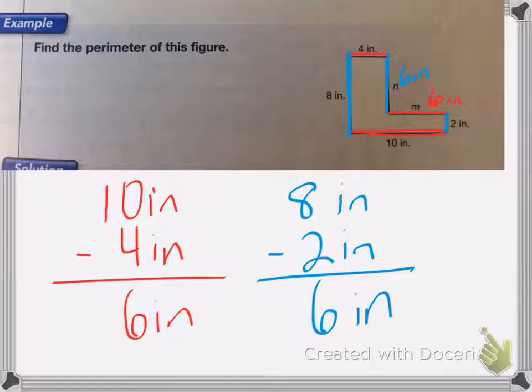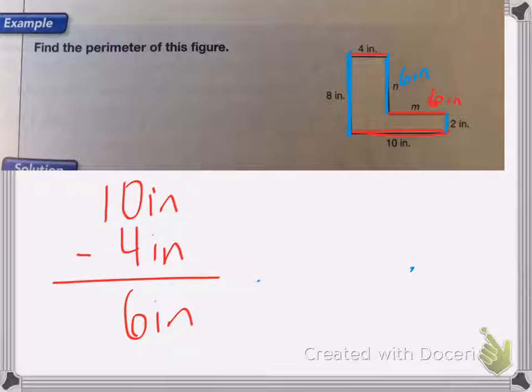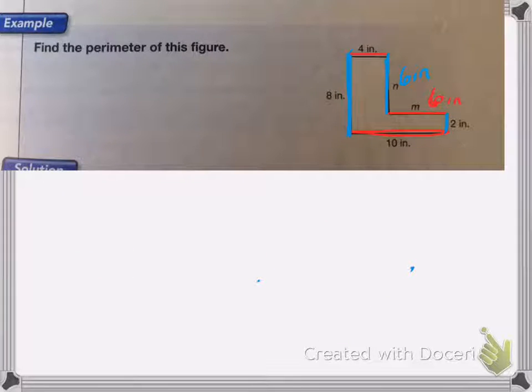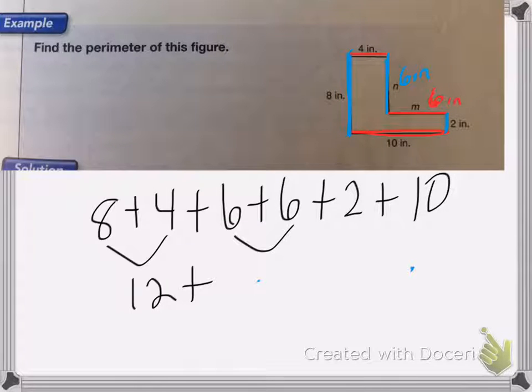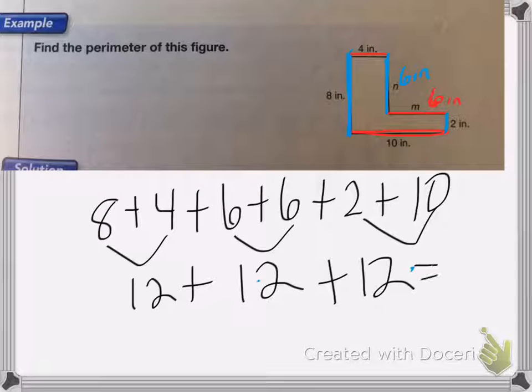Now I can find the perimeter. And you find the perimeter just by adding up the length of all the sides. So I get 8 plus 4 plus 6 plus 6 plus 2 plus 10. 8 plus 4 is 12, plus 6 plus 6 is 12, and 2 plus 10 is 12. So I end up with 12 plus 12 plus 12, which is 36 inches.